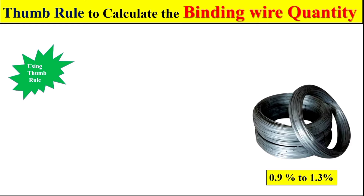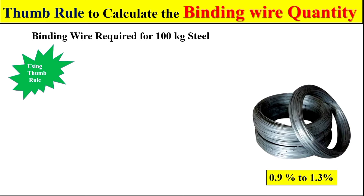The thumb rule to calculate the binding wire quantity is: we normally provide the binding wire quantity of 0.9% to 1.3% of the total steel work. This simply means for 1000 kg of steel work, we require 0.9 to 1.3 kg of binding wire.